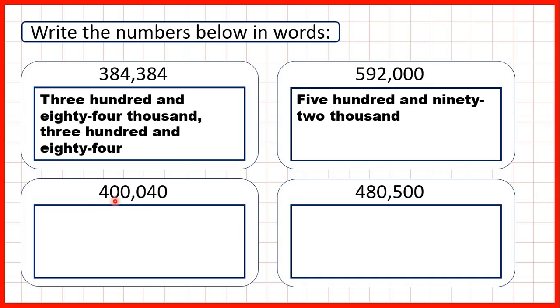Here again, we can read the number up to the comma and we have 400. So that's four hundred thousand. Then we read the number after the comma. We have zero, four, zero.